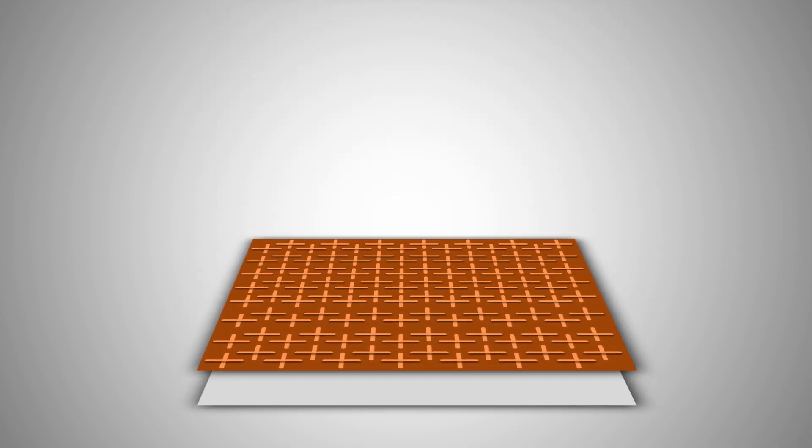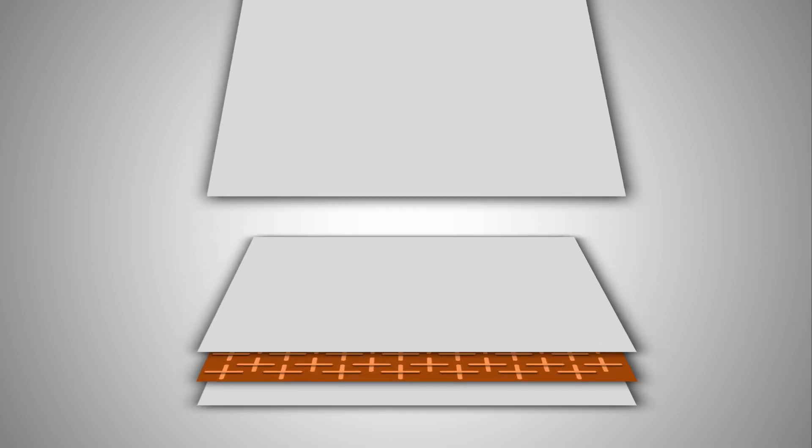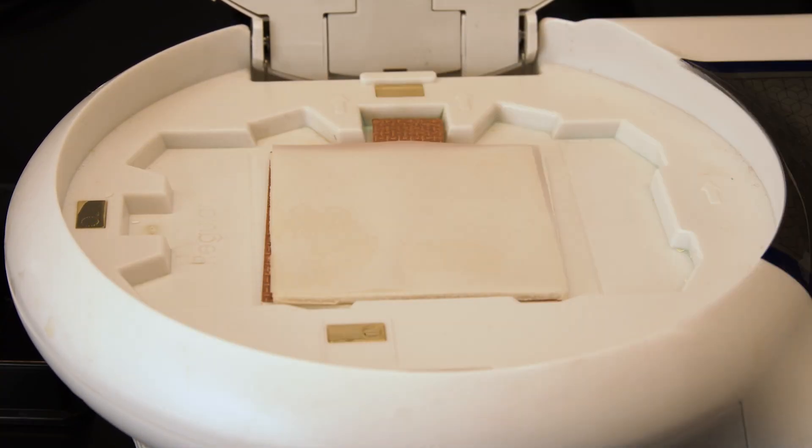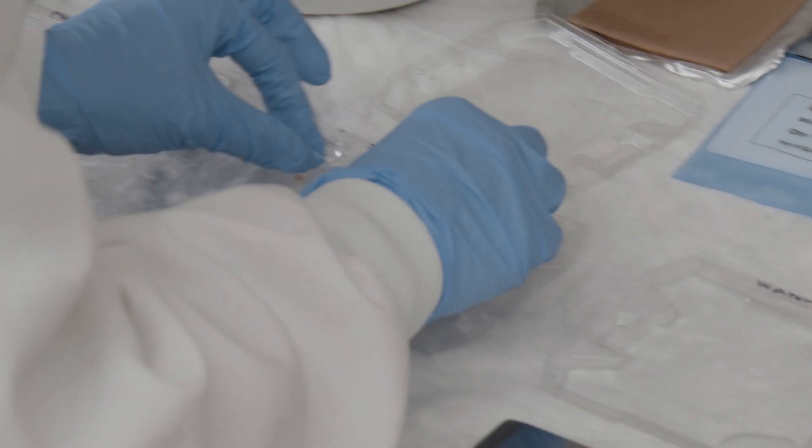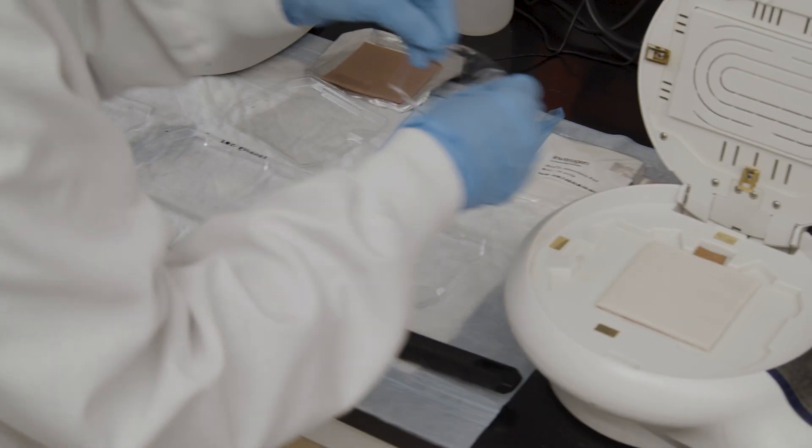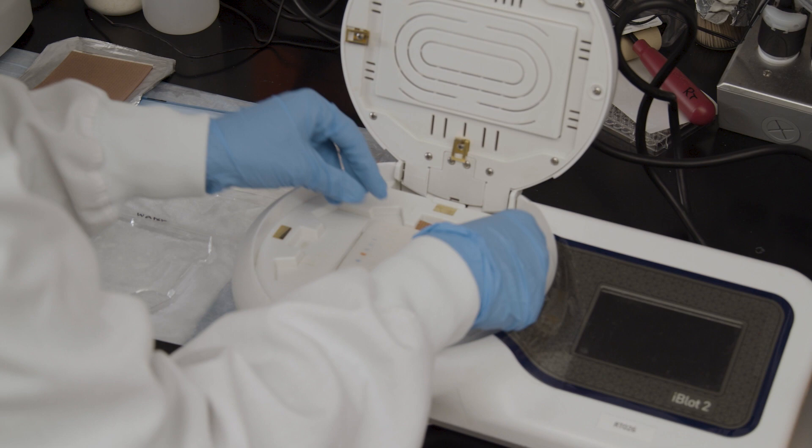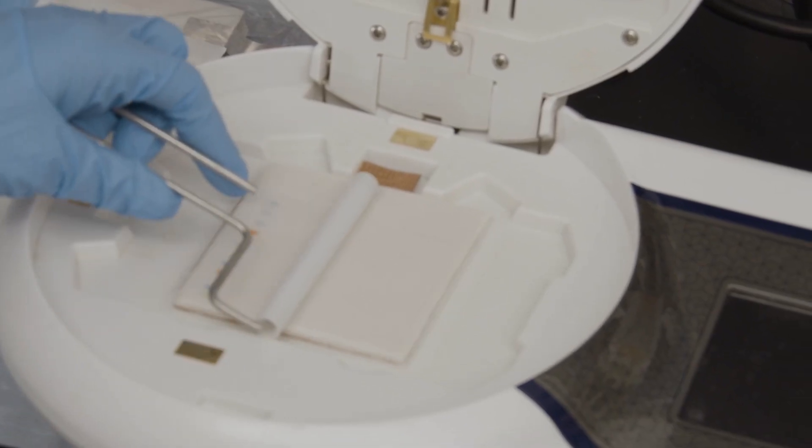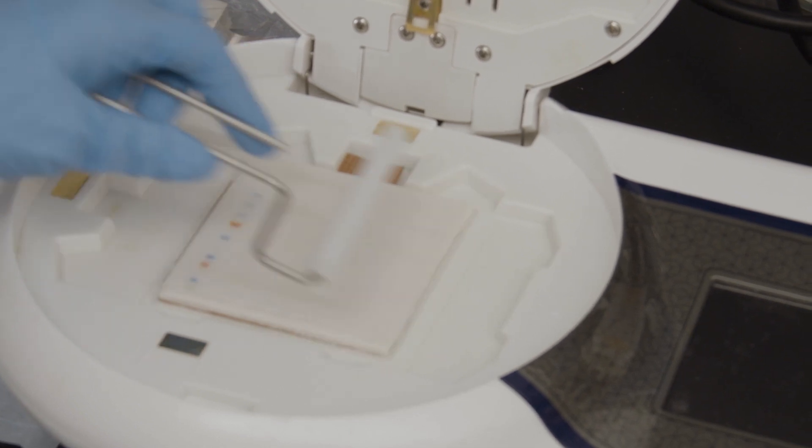To assemble your transfer sandwich, make the bottom stack like so. Absorbent pad, copper anode, anode stack, and membrane. Place the blotting apparatus such that the electrical contacts are aligned. Shake excess liquid off the gel and gently place it on top of the membrane. Use a roller to gently remove any air bubbles between the gel and the membrane.